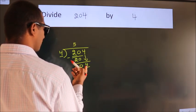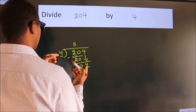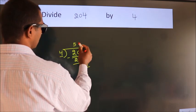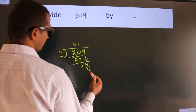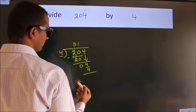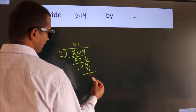So 4. When do we get 4? In the 4 table. 4 times 1 is 4. Now we subtract. We get 0.